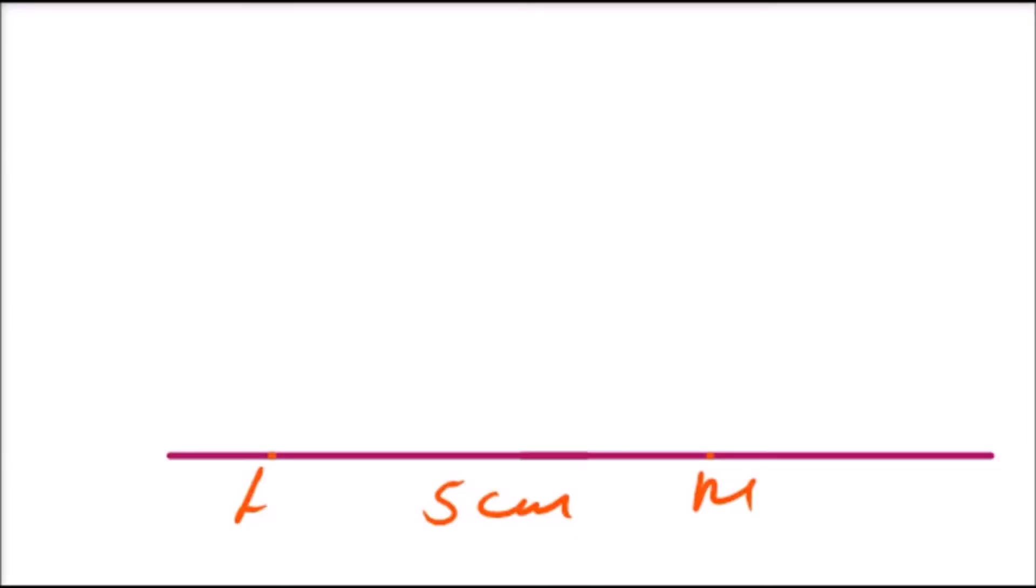So this is the first step, you draw a line, and you measure 5 cm using a ruler, and you can use either the compass or the divider. So once you measure that, you get your LM.